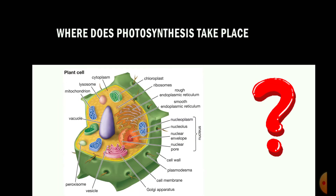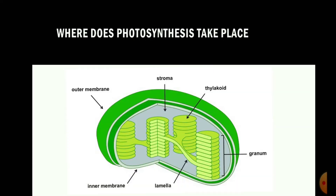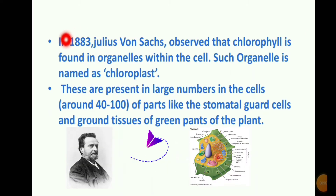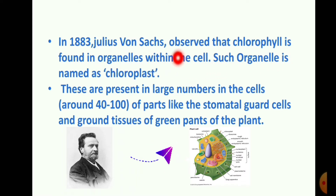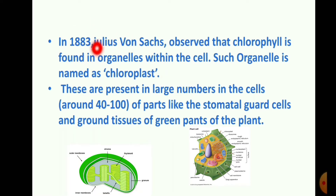The photosynthesis process is done in the plant using a green color pigment. In 1883, Julius von Sachs observed that chlorophyll is found in organelles within the cell. Such an organelle is named the chloroplast.